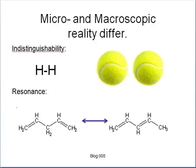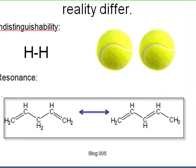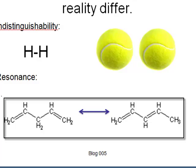That is, indistinguishability is a property that cannot be found in our macroscopic world. Resonance is another property unique to the microscopic. There are forms and structures that flip between one and the other without any obstacles.